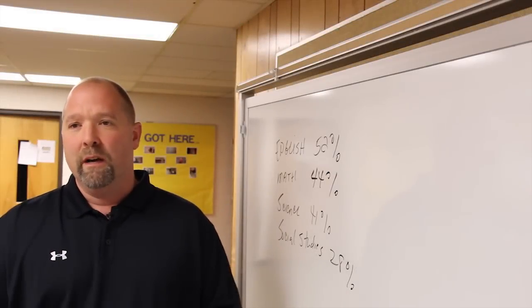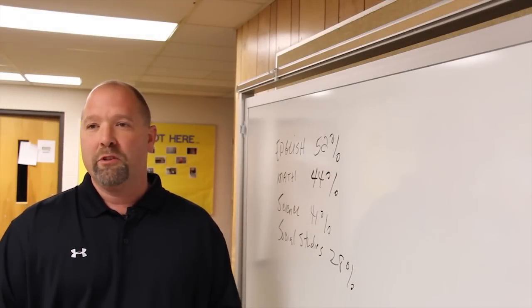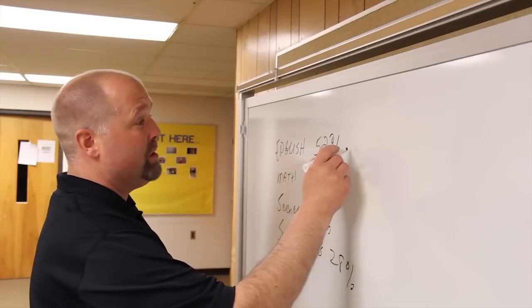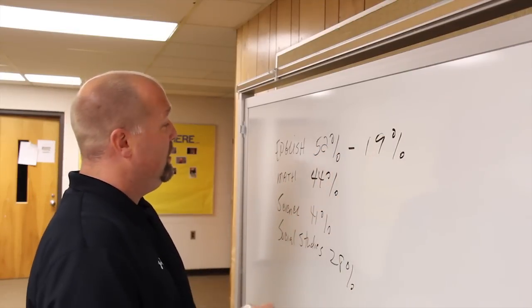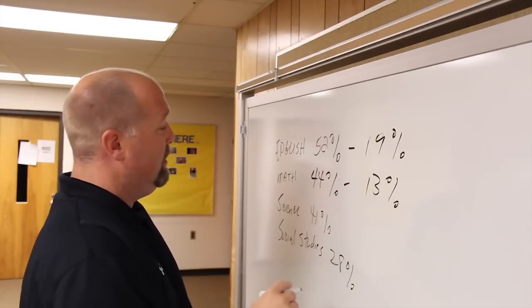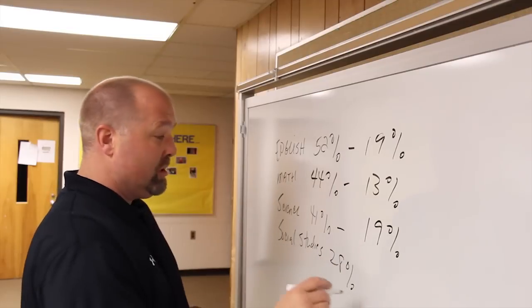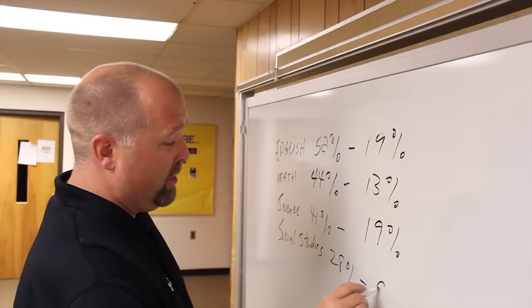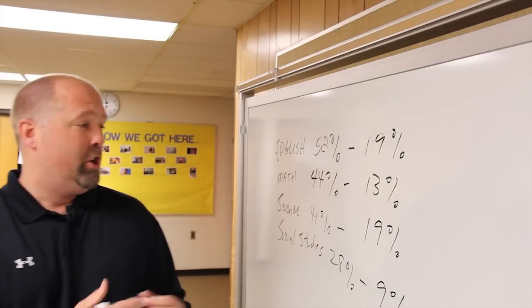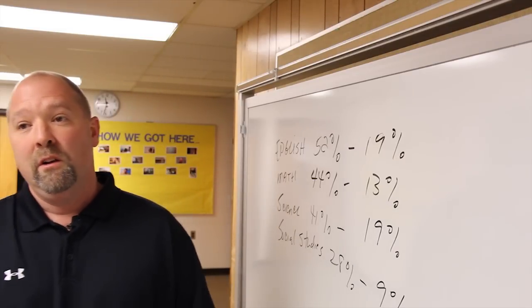By reversing the instructional model, what we did is we actually seen a dramatic reduction in the percentage of students who were failing. And in ELA, the percentages went from 52% to 19%. In math, we went from 44% to 13%. And in science, we went from 41% to 19%. And in social studies, we went from 28% to actually under 10%. And so what we've seen is a huge reduction in failure by reversing the instructional model, which doesn't cost any money.